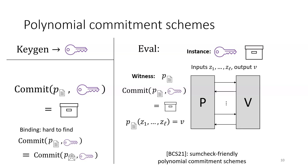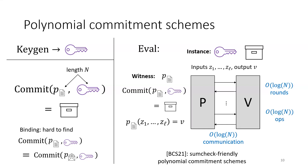The polynomial commitment schemes we're interested in are from BCS21. All you need to know is that if you have a key of length N and a polynomial with N coefficients, then the evaluation protocol has a logarithmic number of rounds and logarithmic communication. For most of the protocol the verifier does logarithmic work, except for one annoying step at the end where the verifier has to do O(N) operations to evaluate a polynomial.